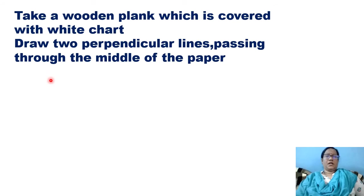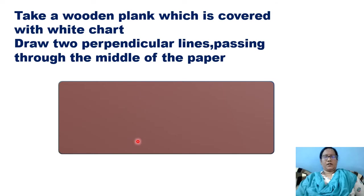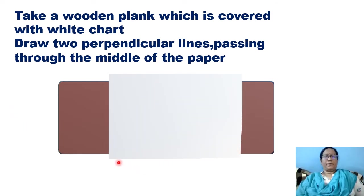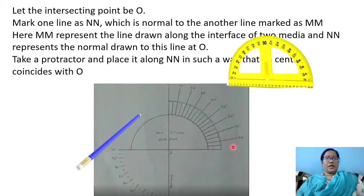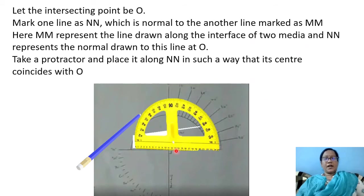Take a wooden board which is covered with white chart. Draw two perpendicular lines passing through the middle of the paper. Let the intersecting point be O. Mark one line as NN, which is normal to the other line marked MM. Here MM represents the line drawn along the interface of two mediums.